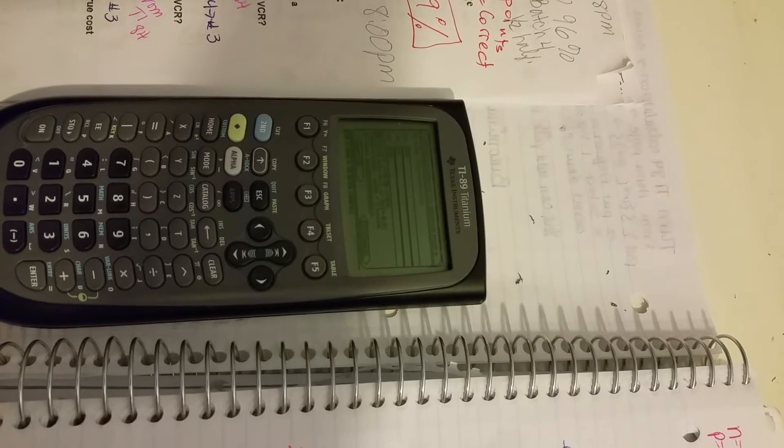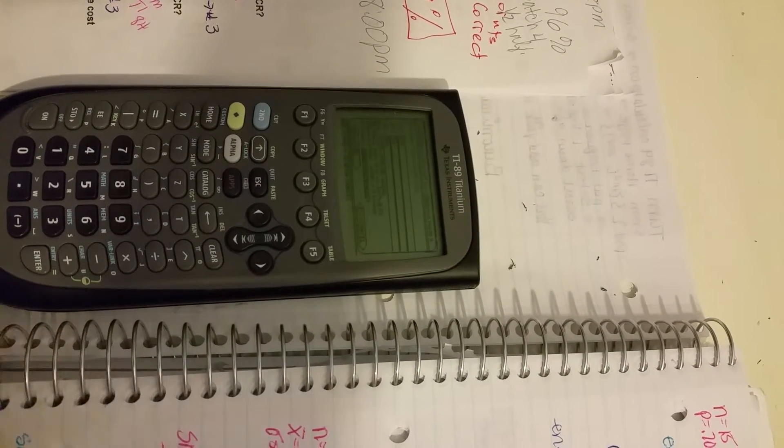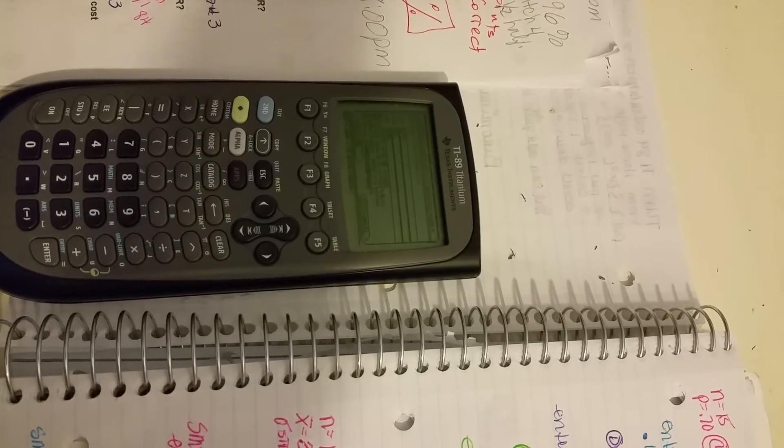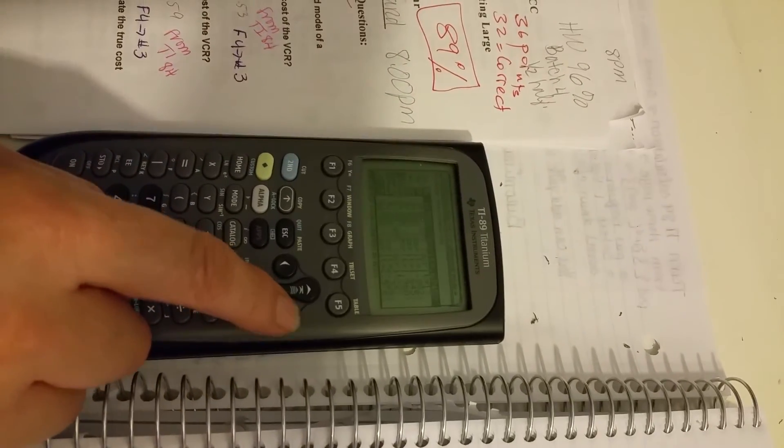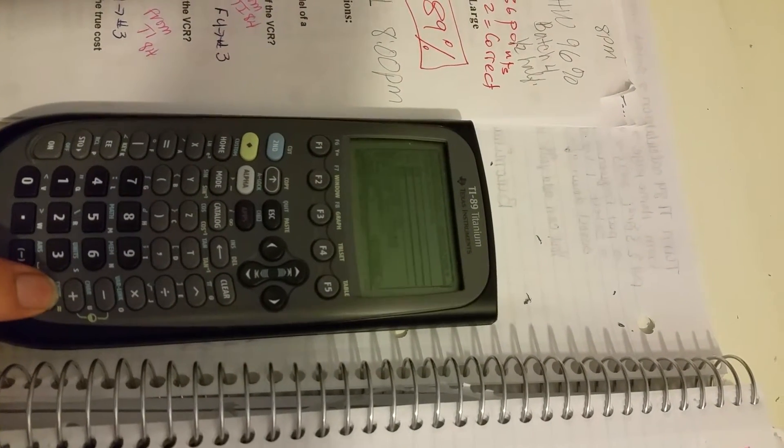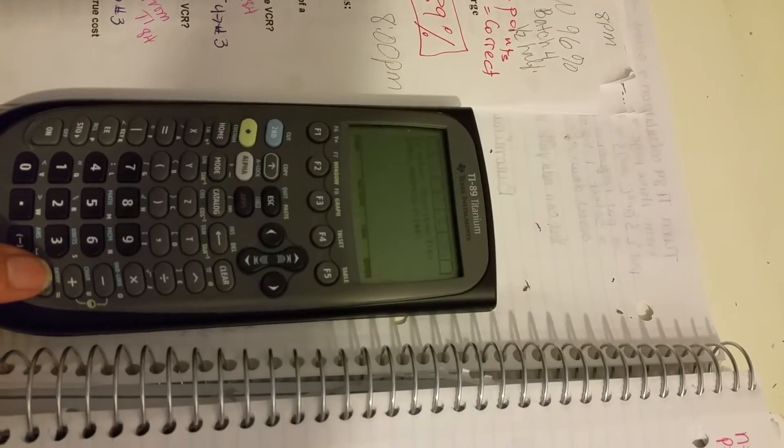They said the confidence level was 95%, right? That's what we're looking for. The 95% confidence interval. So you go down to 95%, which is number five, enter. Then you enter one more time.